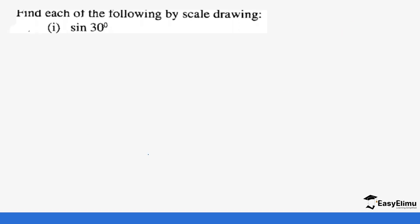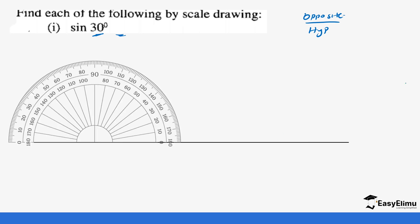Let's do another example. We have been told to find the following by scale drawing: sine 30°, and you have been given one of the sides. Remember, we need the line opposite to the angle and the hypotenuse. First, you draw a line, label it, place a protractor on a point of that line, and measure 30 degrees. Then you introduce a line along that 30 degrees.